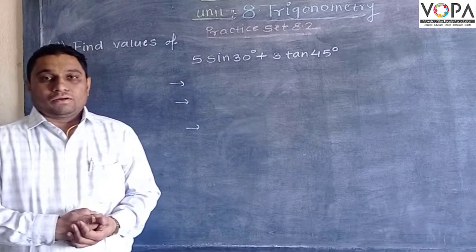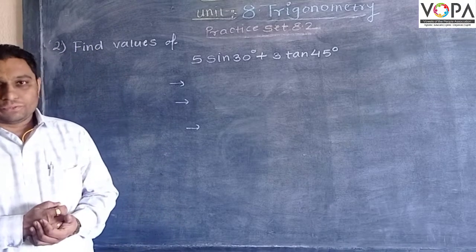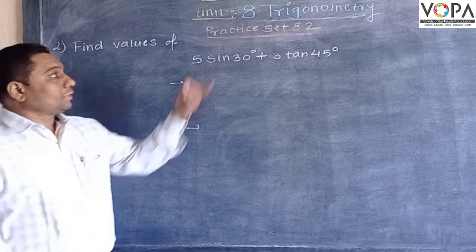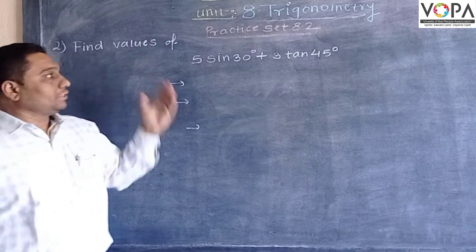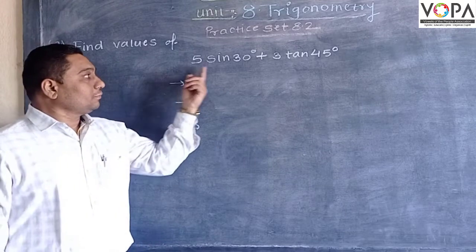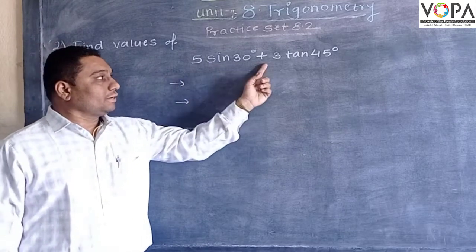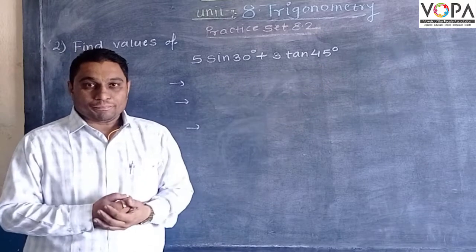Hello friends, now we are going to see practice set 8.2, example number 2. Find values of 5 sin 30 degree plus 3 tan 45 degree.